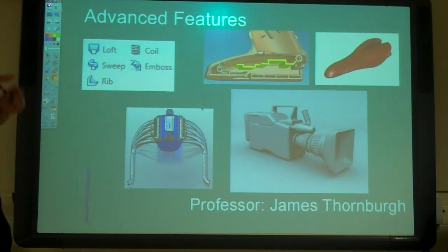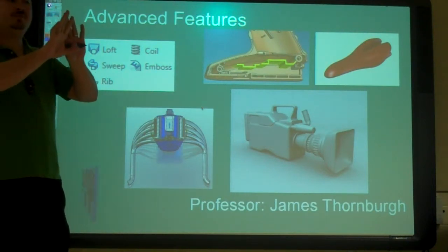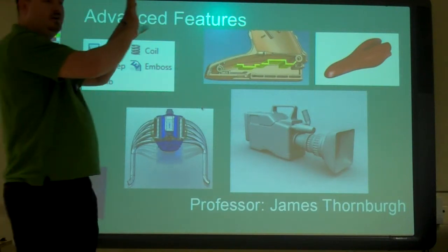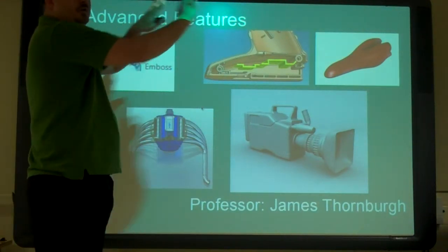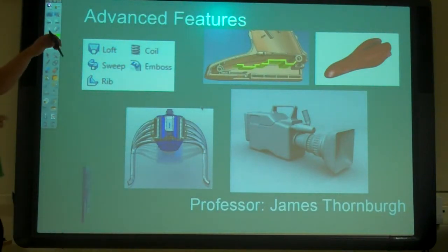And then emboss lets us put labels onto a surface also. We can use text or you can do a shape and what I will do is actually wrap it around the surface. Instead of just going straight in it will wrap it. So that is what we are talking about today.